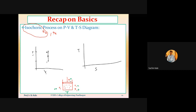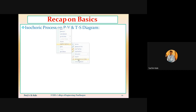On the PV diagram for isochoric heat addition, I draw the constant volume line — a vertical line — and take the initial and final points. The deciding parameters are volume and pressure: volume remains constant and pressure increases, so the arrow points upward. On the TS diagram, the constant volume line has a steeper inclination. Both temperature and entropy increase, so the arrow from point one to point two points in the upward direction — indicating the isochoric heat addition process.